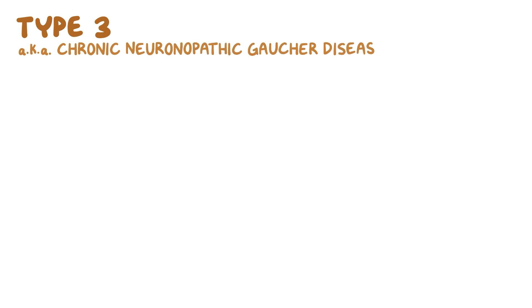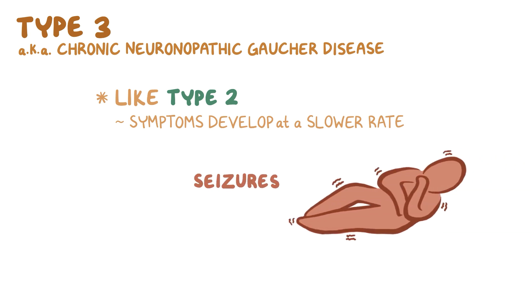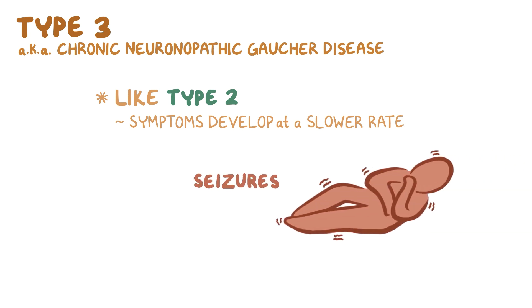Type 3, also called chronic neuronopathic Gaucher disease, is like type 2, but the symptoms develop at a slower rate, and in some individuals they can develop over decades. Seizures can be a major problem for some individuals with type 3 Gaucher disease.